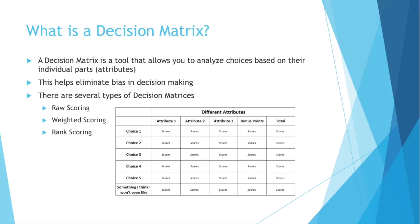There are a few different types of Decision Matrices. You can raw score them, you can use a weighted scoring system, or a rank scoring system. That picture shows a very generic outline for a Decision Matrix. Notice all your choices on the left, and then your attributes along the top. Down each column, you rank that attribute for each different choice and give it a score. Then on the far right, you total up all the attributes for each choice and see what the score is. The highest score wins.